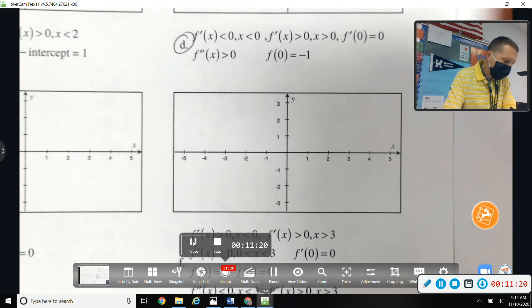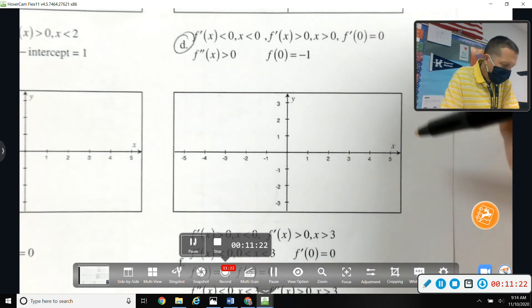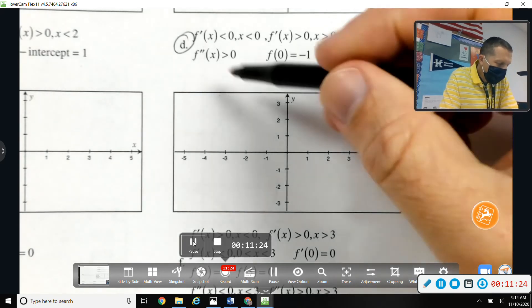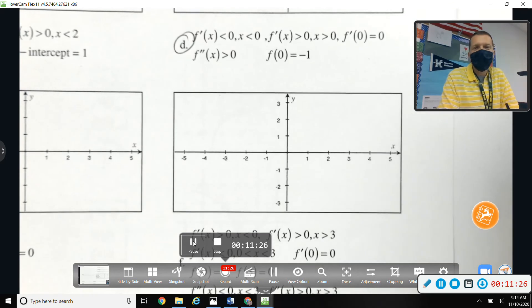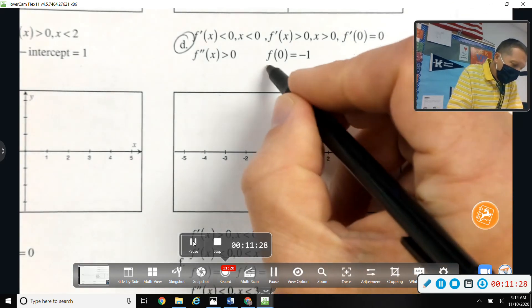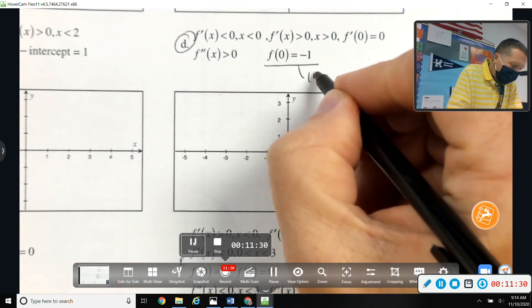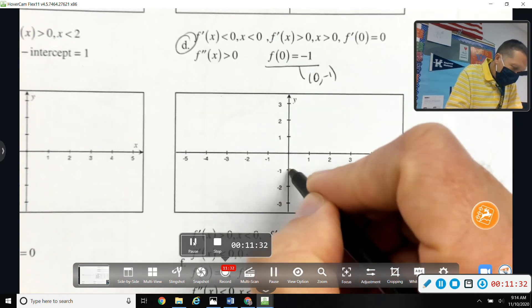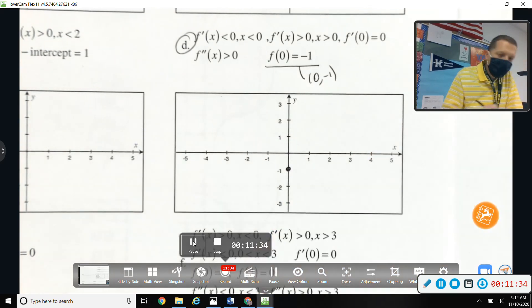Goodness, this is a lot of information. I'm scanning through looking for the easy information, like f of 0 equals negative 1. That's a point I can handle that.